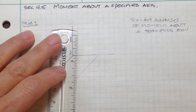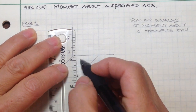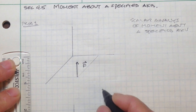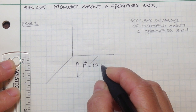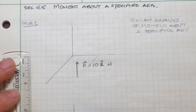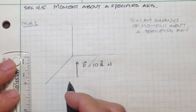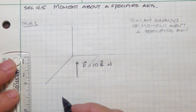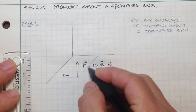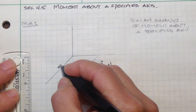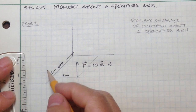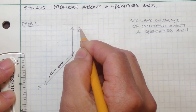Suppose we have this force F directed upwards, with a magnitude of 10 newtons. Let's call out some of these dimensions: this is 2 meters and that length here is 4 meters. We'll label our axes as x, y, and z.